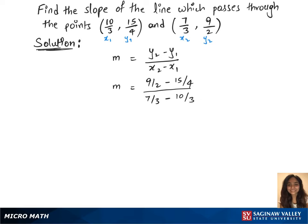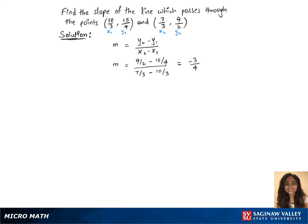We'll get the m value as minus 3 over 4. So that's the slope of the line which passes through the given points.